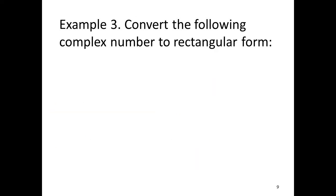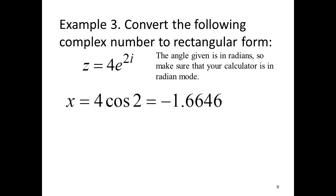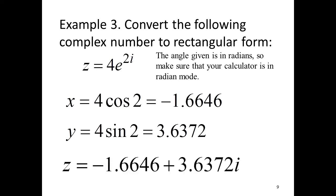Example 3: Convert the following complex number to rectangular form: z equals 4e raised to 2i. The angle is in radians, so make sure your calculator is in radian mode. Using a calculator, x equals 4 times cosine of 2 radians, which is negative 1.6646, and y equals 4 times sine of 2 radians, which is 3.6372. So in rectangular form, z equals negative 1.6646 plus 3.6372i.